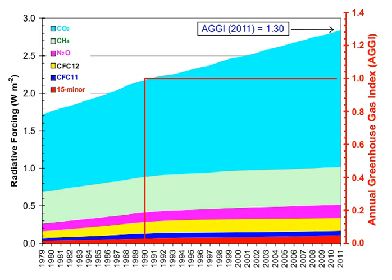When ranked by their direct contribution to the greenhouse effect, in addition to the main greenhouse gases listed above, other greenhouse gases include sulfur hexafluoride, hydrofluorocarbons, and perfluorocarbons. Some greenhouse gases are not often listed — for example, nitrogen trifluoride has a high global warming potential but is only present in very small quantities.